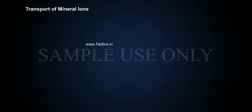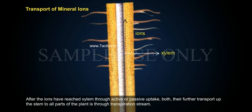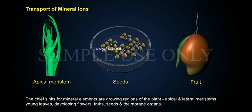Transport of Mineral Ions: After the ions have reached the xylem through active or passive uptake, their further transport up the stem to all parts of the plant is through the transpiration stream. The chief sinks for mineral elements are growing regions of the plant — apical and lateral meristems, young leaves, developing flowers, fruits, seeds, and storage organs.